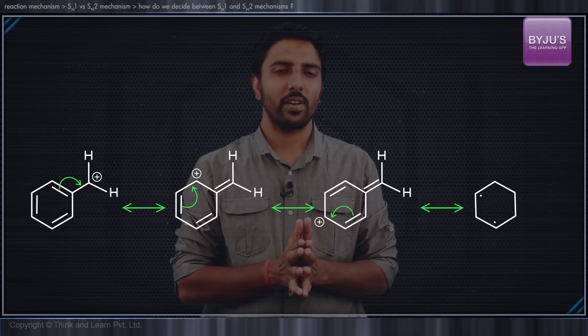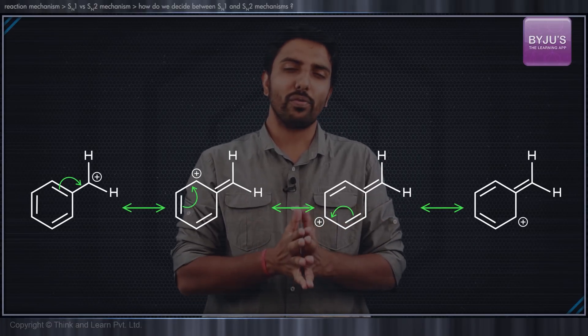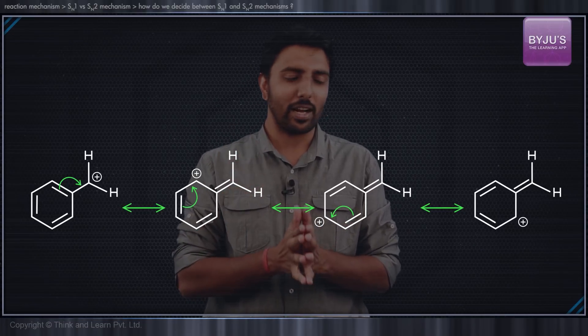Likewise, if we have a benzyl chloride undergoing an SN1 mechanism, first the stable benzyl carbocation is formed, followed by the nucleophilic attack only at the benzyl carbocation.